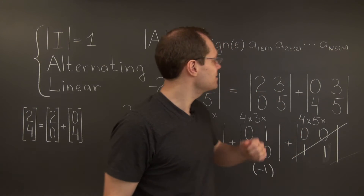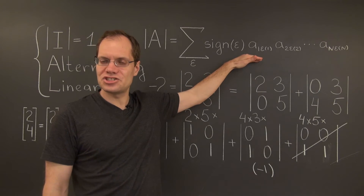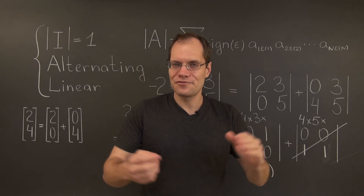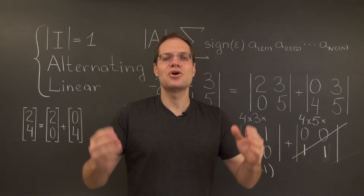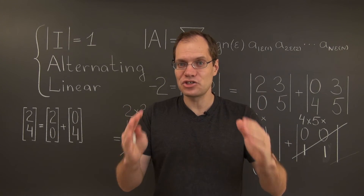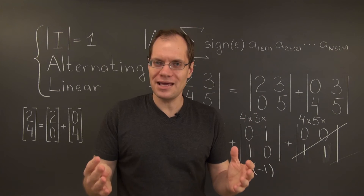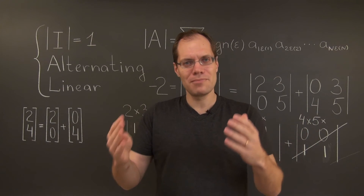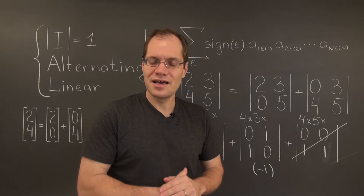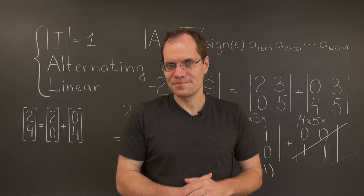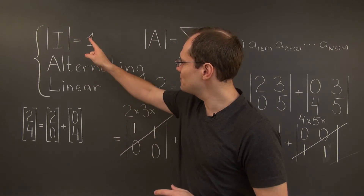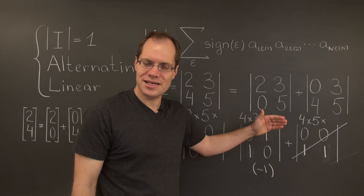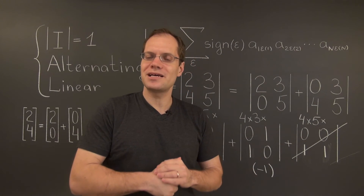And now you're really beginning to see how this formula is taking shape. We have those products of n terms, one from each row and one from each column — we have found our n factorial terms. The only thing that remains is to determine the sign, which will be either plus one or minus one, because the remaining determinants have values of one or minus one. By the alternating property in combination with the identity property, it will be one if the permutation that determinant represents is an even number of swaps from the identity.